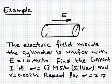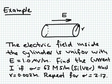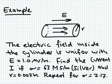Here is an example. We have a cylinder — which could actually be a resistor — with an electric field inside it of one microvolt per meter, which is 10 to the minus 6 volts per meter. We want to find the current I flowing in this conductor. The conductivity is 63 mega-siemens per meter — the unit of conductivity is siemens per meter — and this is a huge conductivity because this material is silver, which is a good conductor with a large number of valence electrons available for conduction.